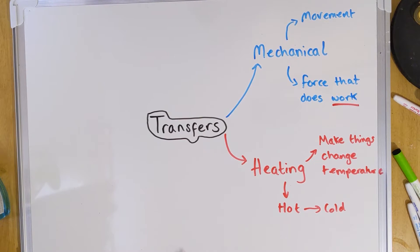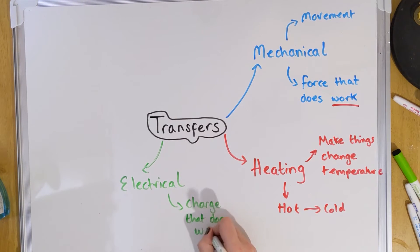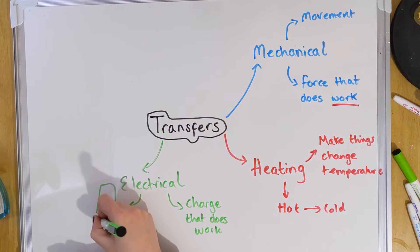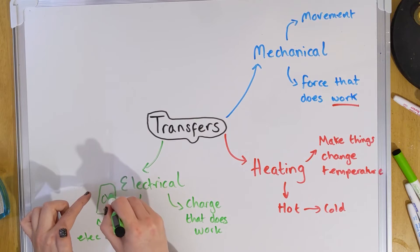Our next transfer is electrical transfer. Electrical is to do with electricity — the electricity running through your wires to power the screen you're watching this on. For example, if you have a battery-powered phone, you'd have the chemical store inside the battery, and that would transfer electrically into the heat coming out of your device and the things you see on the screen. Similarly, a power bank has a chemical store that transfers electrically into the chemical store inside your phone's battery.